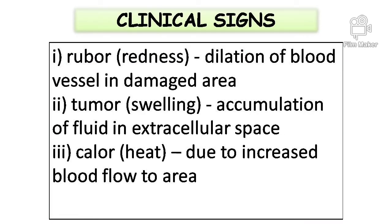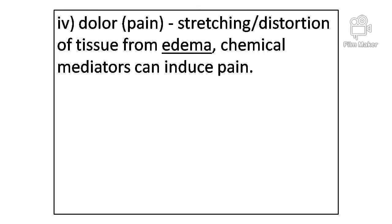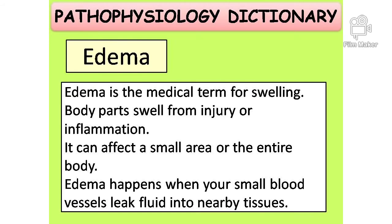Calor means heat, due to increased blood flow to the area. Dolor means pain — stretching or distortion of tissue from edema, and chemical mediators can induce pain. Edema is the medical term for swelling. Body parts swell from injury or inflammation. It can affect a small area or the entire body. Edema happens when your small blood vessels leak fluid into nearby tissues.